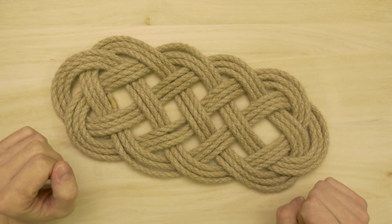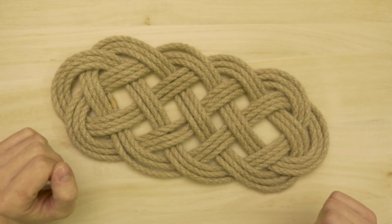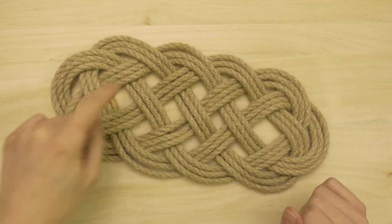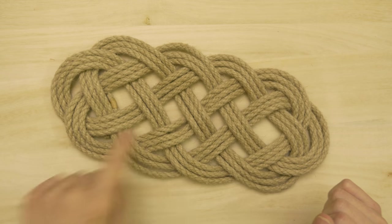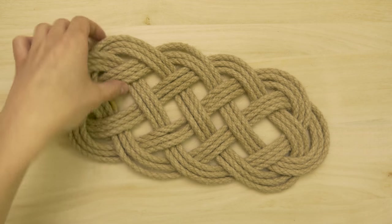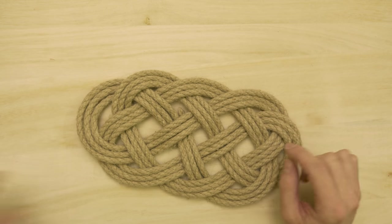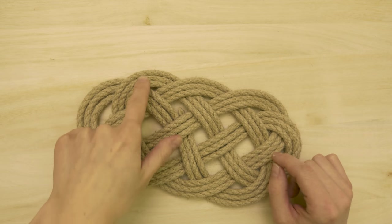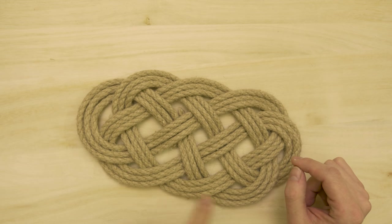The mat is sometimes confused with the Ocean Plate mat, but this mat has four outer bites on each of the sides, while the Ocean Plate mat only has three outer bites on each of the sides.